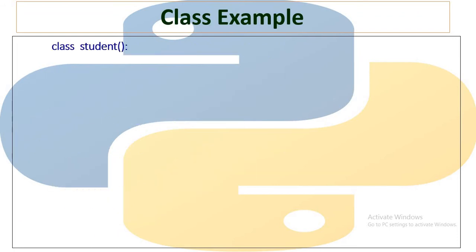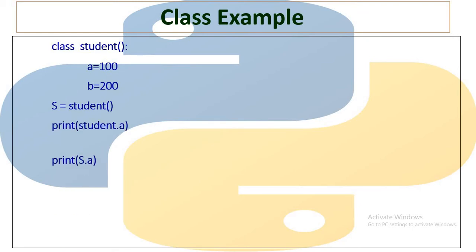Here I have created a class with the name student. This class has data like one variable having value equal to 100 and one more variable having value equal to 200. I created an object of that class and these are the ways with which I can access data of the class. You can see I access data by using the class name and I access data by using the object name. Whatever data is defined in the class is common to class as well as object, but this will not apply to all data of the class, only for specific data.